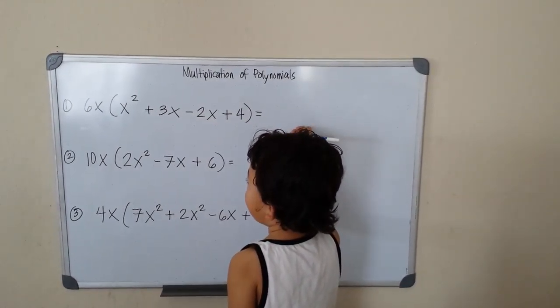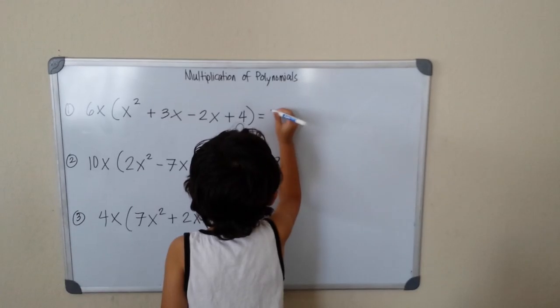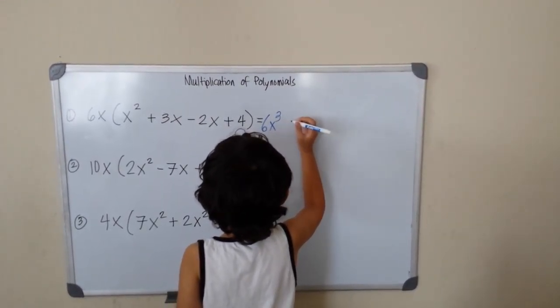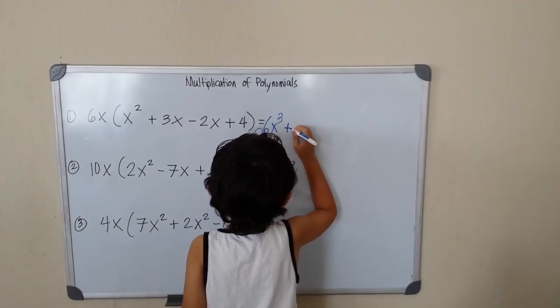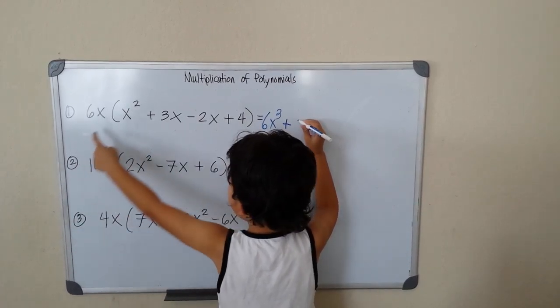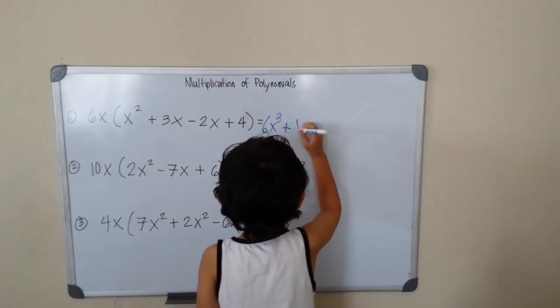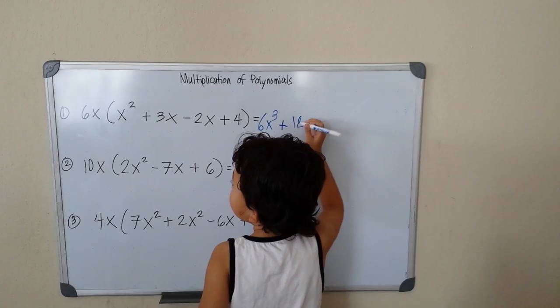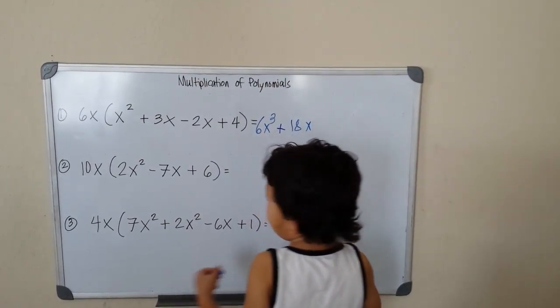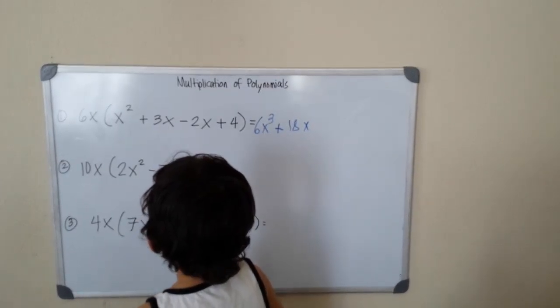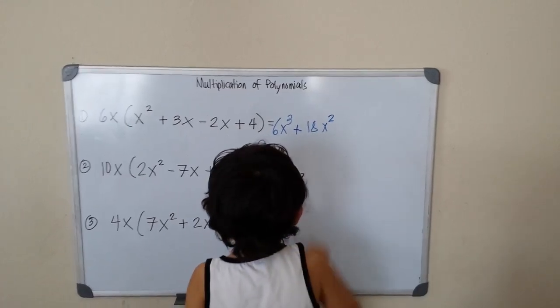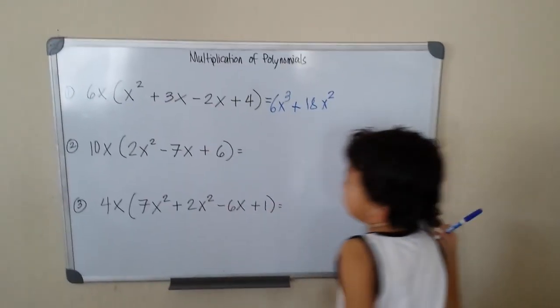6x times x squared equals 6x cubed. Plus, plus. This is 18x squared. x and x. So x times x will be x squared.